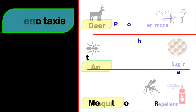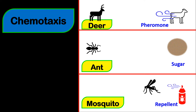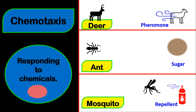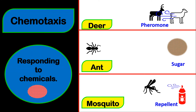Now let's look at chemotaxis. Chemo, as the word suggests, is responding to chemicals. For example, in deer, the male deer — which is the buck — will move towards the female deer — which is the doe. In this case, the female is releasing a chemical called pheromone, which is released when she is indicating that she is ready to mate and reproduce.